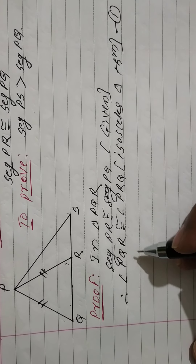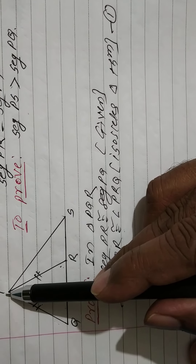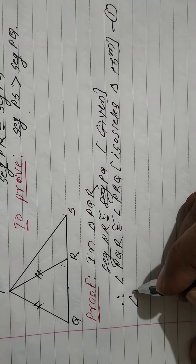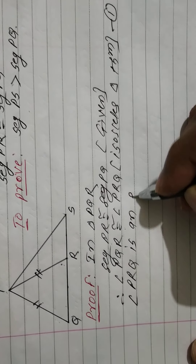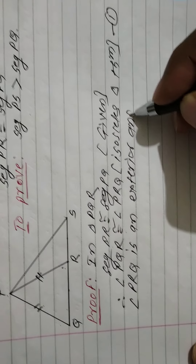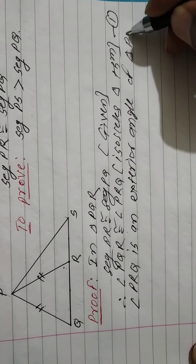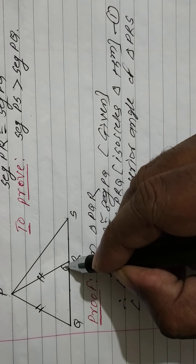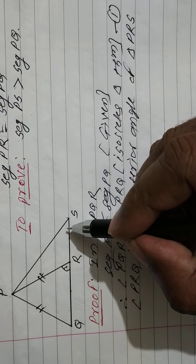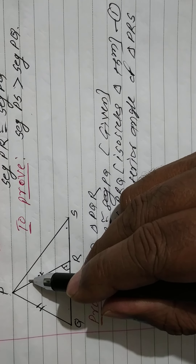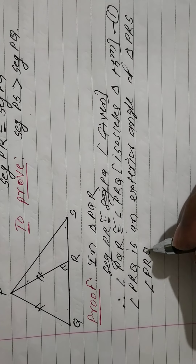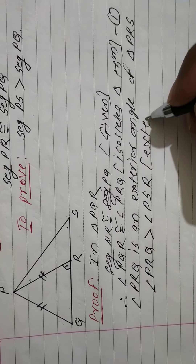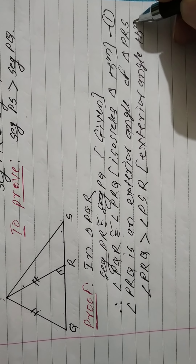Now, angle PRQ is an exterior angle of triangle PRS. By the exterior angle theorem, the measure of an exterior angle is greater than each of its remote interior angles. Angle S and angle P are the remote interior angles. Therefore, angle PRQ is greater than angle PSR.